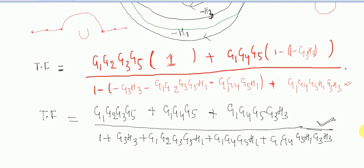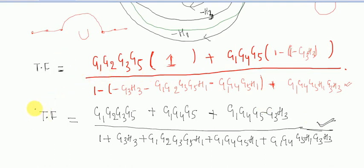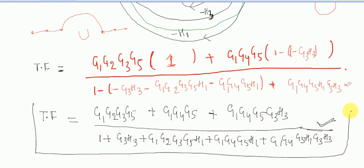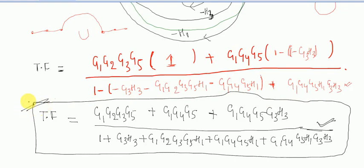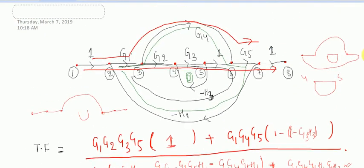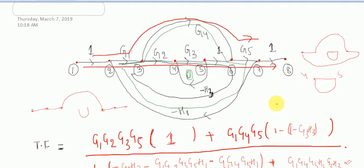In this way you can find the transfer function in a single step. You might think it took 5 to 6 minutes, but if you practice 2 to 3 problems using this method, you can directly find the transfer function just by looking at the signal flow graph. If you want me to explain more examples, comment below and I will make more videos. Hope you enjoyed this video — share it with friends and see you in the next one.